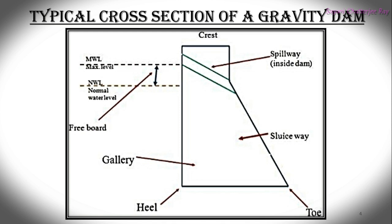At the bottom of the dam, there is a sluiceway. Sluices are openings extending from the upstream face to the downstream face of the dam. They are used to clean silt from the reservoir, supply water, and release water to decrease the peak of the flood in the reservoir.